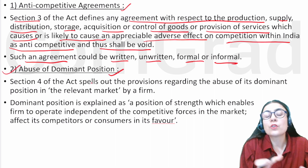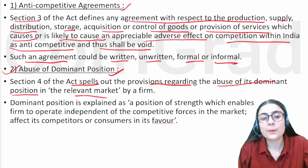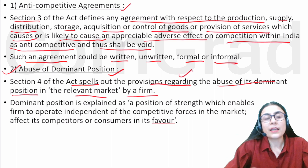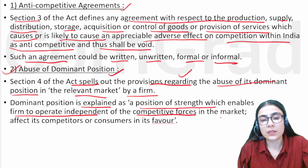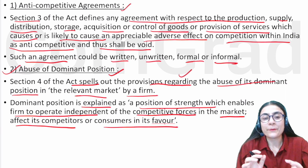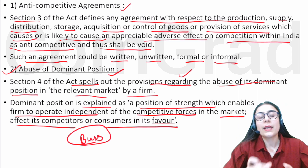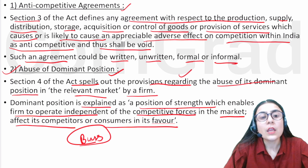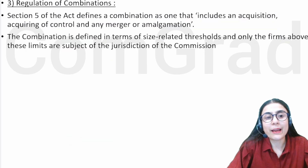Next is abuse of dominant position. Section 4 contains provisions regarding the abuse of a dominant position in the relevant market by a firm. Dominant position is explained as a position of strength which enables a firm to operate independently of competitive forces in the market, or to affect its competitors or consumers in its favor.